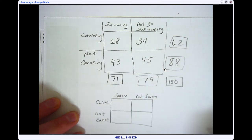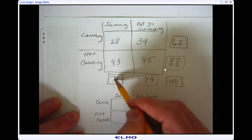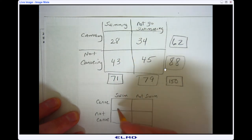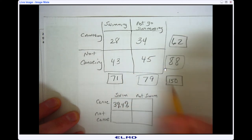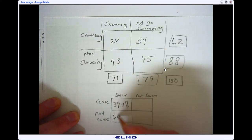And remember, to do a relative frequency, what you do is you take this number, which is 28, and divide it by 71. And when I do that, I'm going to round that. It's going to be about 39.4%. Do the same thing. If I take 43 divided by 71, I'm going to get 60.6%. When you do this, it should add up to 100%.